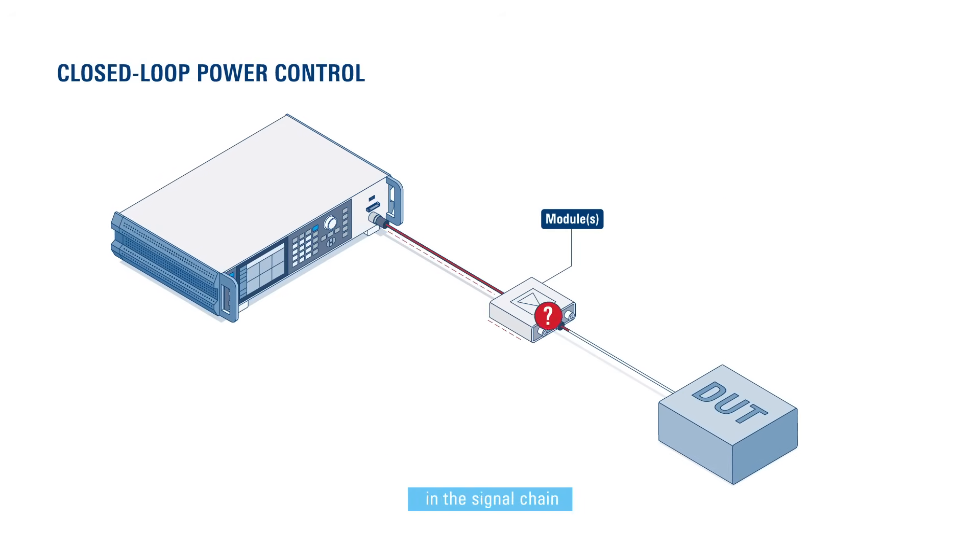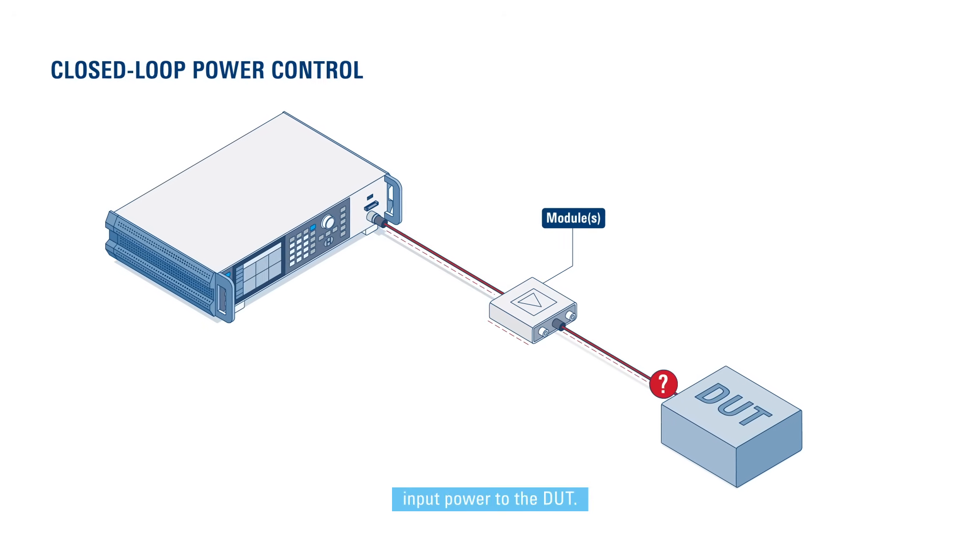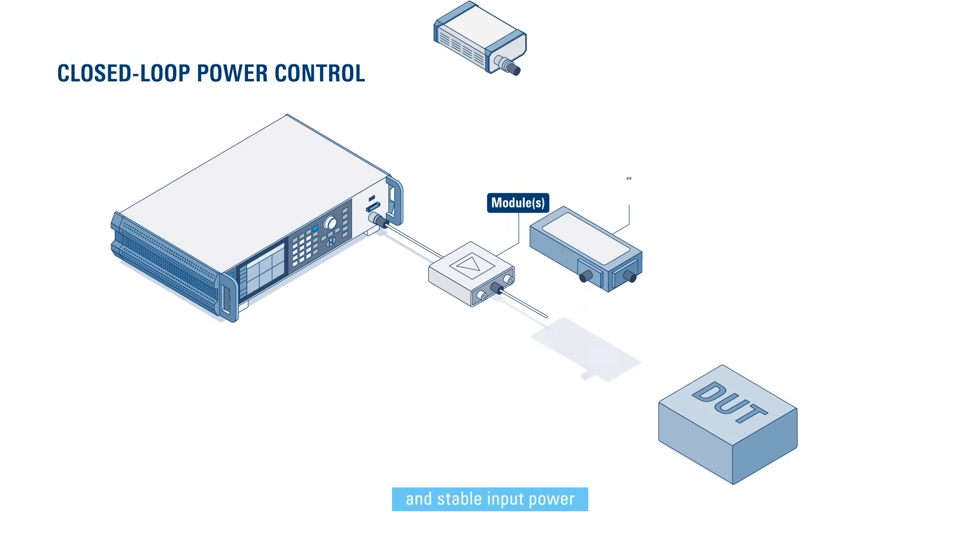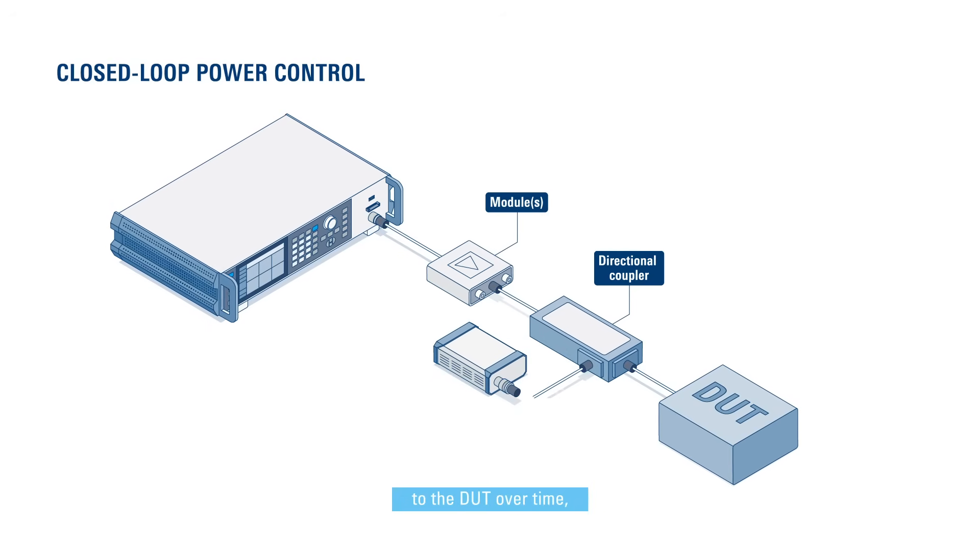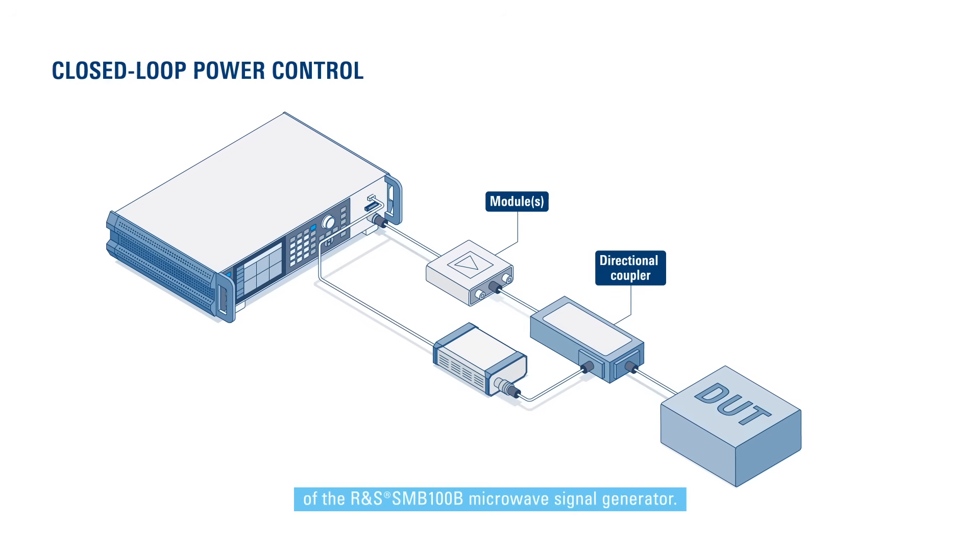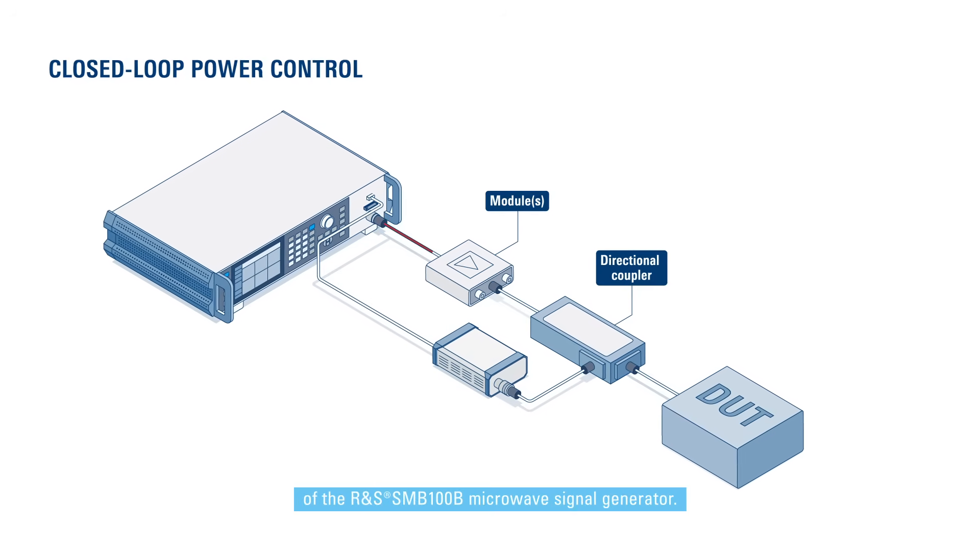Unexpected losses or gains in the signal chain can result in unknown input power to the DUT. To ensure a highly accurate and stable input power to the DUT over time, we've made dynamic closed-loop power control a standard feature of the SMB100B Microwave Signal Generator.